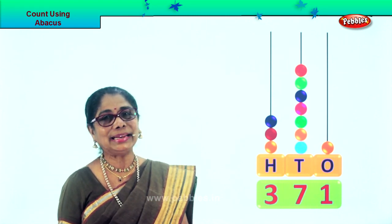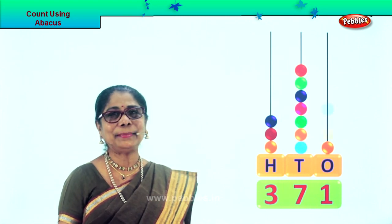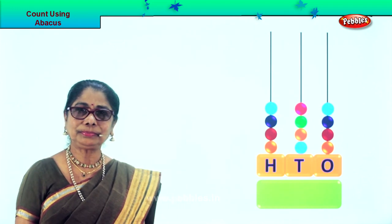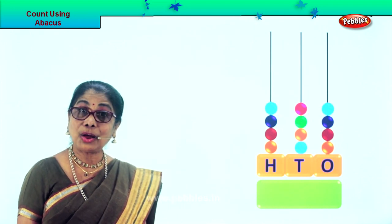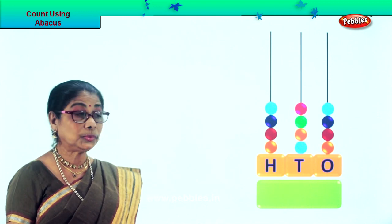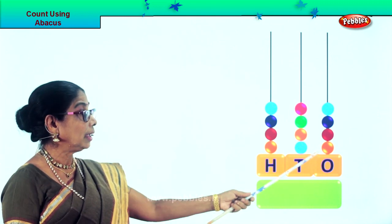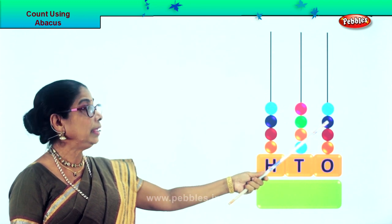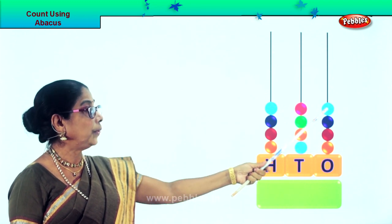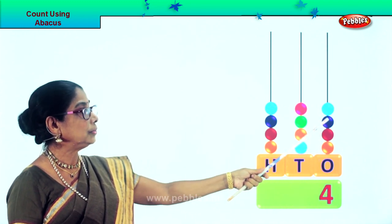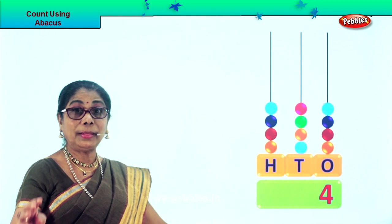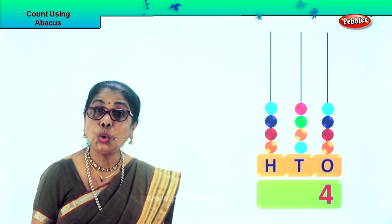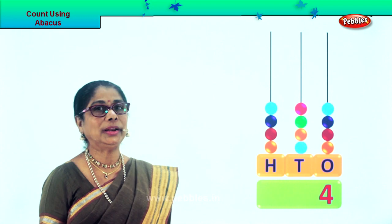Good. Let's take another sum. Let's count all the 1s in the 1s place. Count the beats: 1, 2, 3, 4. There are 4 beats and we put down number 4 in the 1s place.